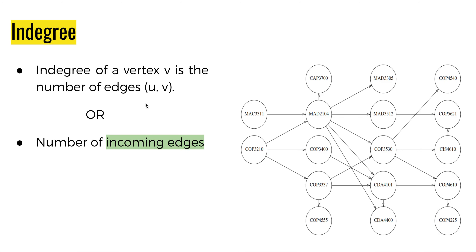For the formal algorithm we will be discussing the term 'in-degree' quite frequently. The in-degree of a vertex V is the number of edges of the form (U, V), meaning the number of incoming edges ending at vertex V. For example, the in-degree of MAD 2104 is 2 because two different edges end at that node. MAC 3311 and COP 3210 do not have any incoming edges, so the in-degree of these vertices is 0.